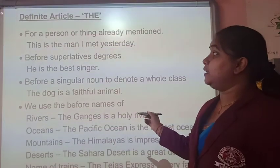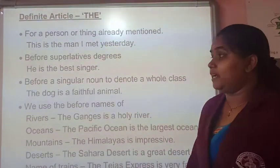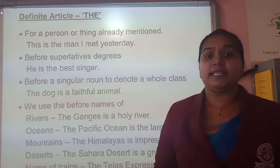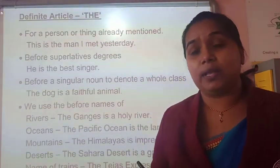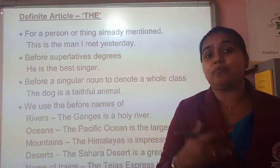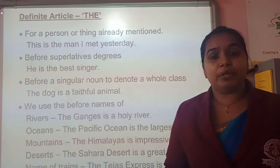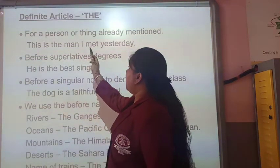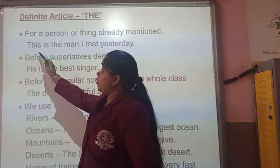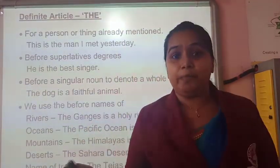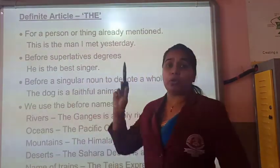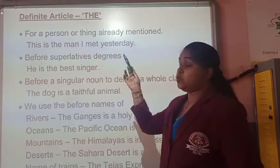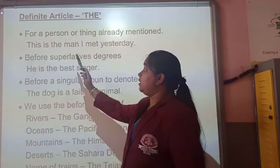Now we will come to the definite article 'the'. Which are the places where we use the definite article 'the'? First, for a person or thing already mentioned. Suppose in a sentence I am talking about a particular person or thing which I have already talked about in the first part of the sentence and I want to say something about them again, then I am going to use the definite article before that noun. For example: 'This is the man I met yesterday.' Here I have already pointed out this man, and that is why I am using 'the man' — pointing at the particular man I spoke about yesterday.